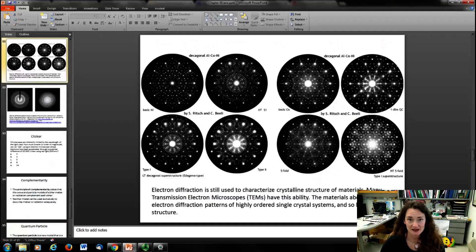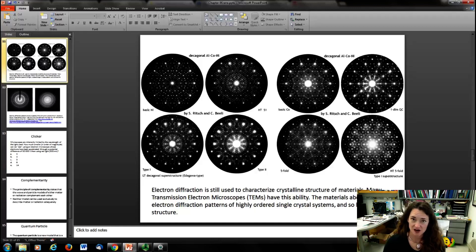Now, this idea that particles can be used and diffracted off of materials has been exploited ever since then. Electron diffraction, for example, is still used to characterize crystalline structures of materials. Lots of transmission electron microscopes and some scanning electron microscopes have the ability to measure the electron diffraction pattern and then you can use the structure of the electron diffraction pattern to identify unknown crystals.